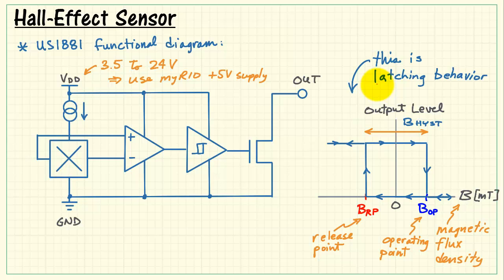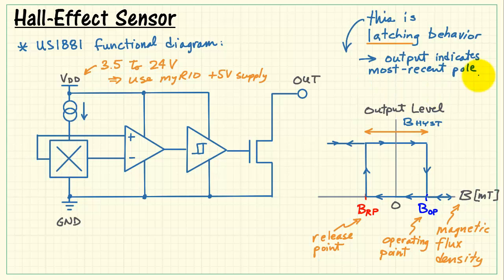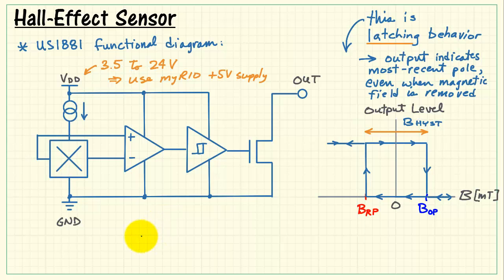This is what we call latching behavior. And this is the behavior specifically of the US1881. The output indicates the most recent pole that was applied, even when the magnetic field is removed. And that's a very important point to understand latching behavior.